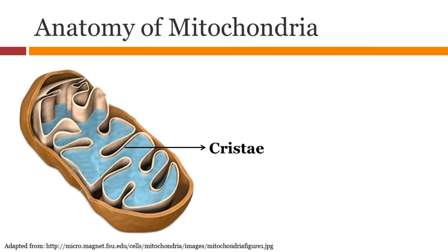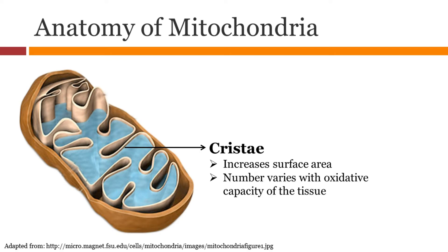The cristae are the foldings inside the mitochondria. They increase the surface area. The number of cristae in a given mitochondria varies based on the oxidative capacity of the tissue.